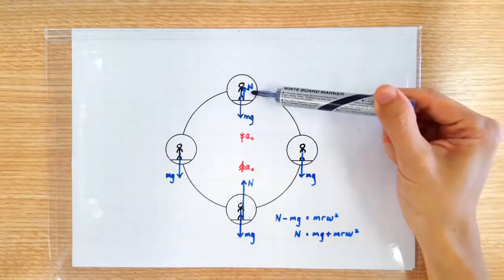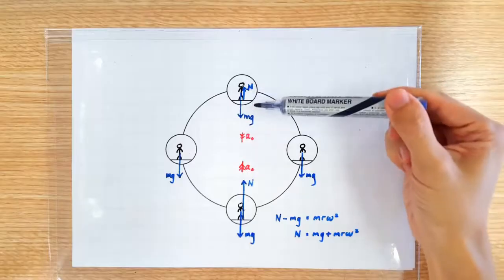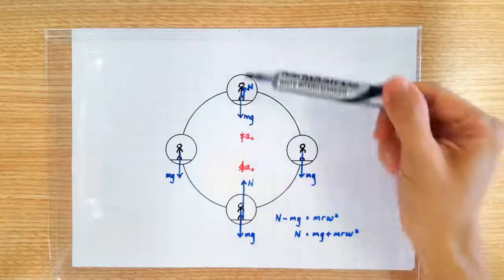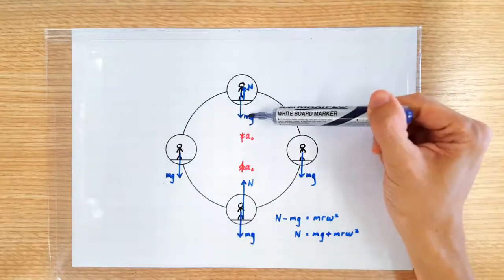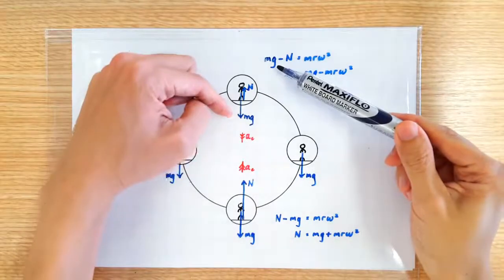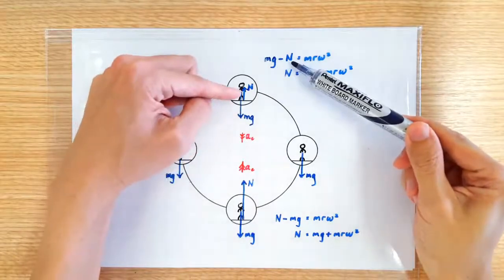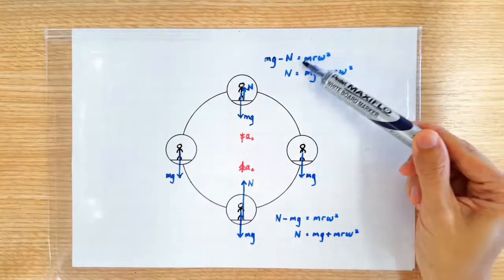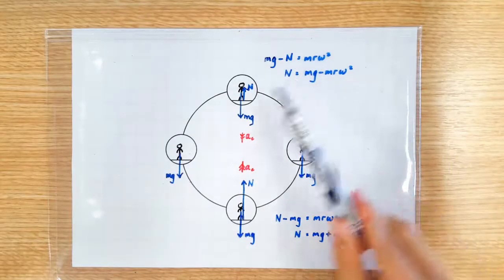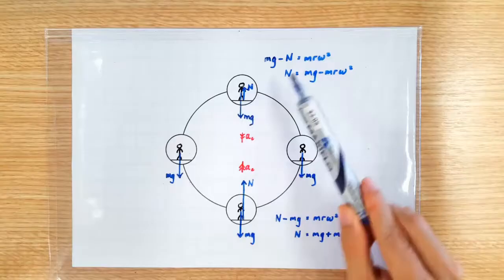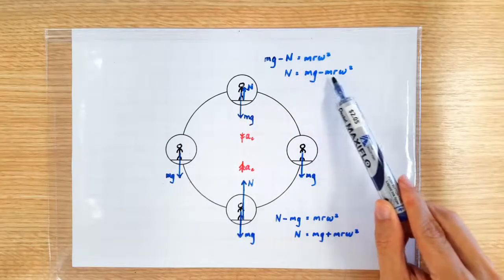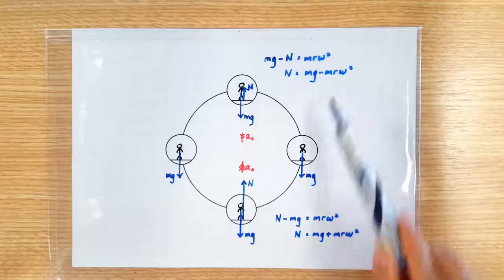When the man is at the top of the ride, the centripetal direction is downward, which means the net force must be downward, which means the normal contact force must be smaller than the downward weight. So we can write: the downward weight minus the upward normal contact force equals the required centripetal force. So the normal contact force is smaller than mg by an amount equal to the required centripetal force.